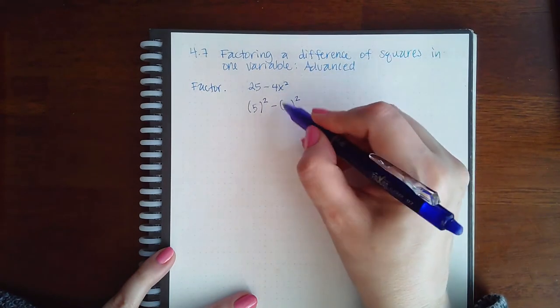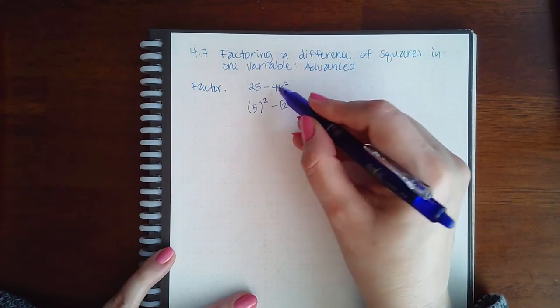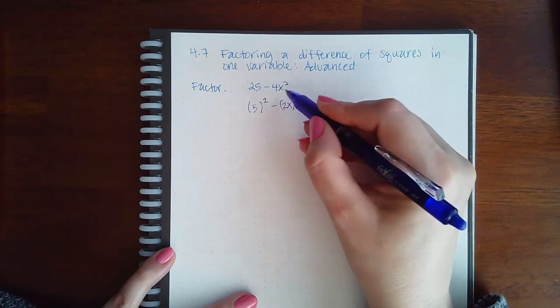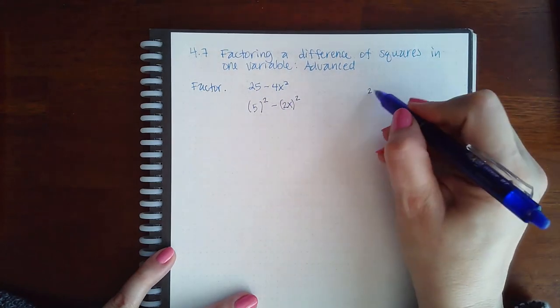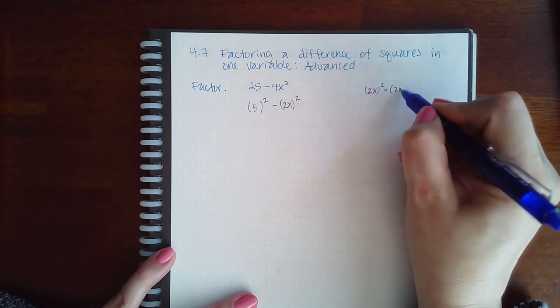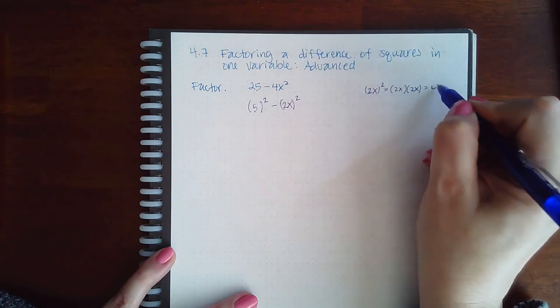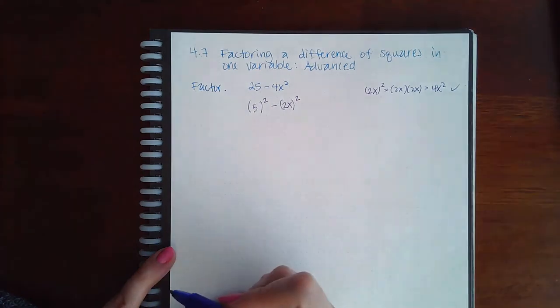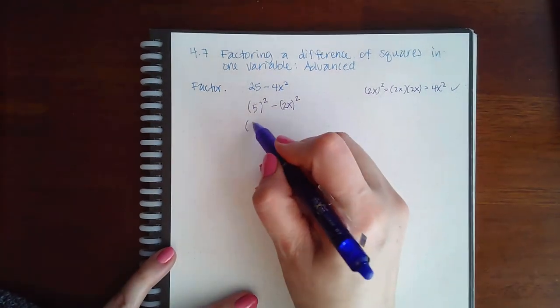I know that 2 squared gives me 4, and x squared gives me x squared. So 2x squared is 2x times 2x, which is 4x squared, so it checks out. That tells me that 5 is going to go in the front.